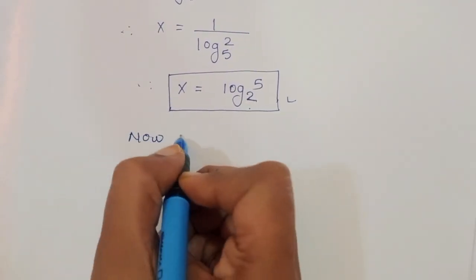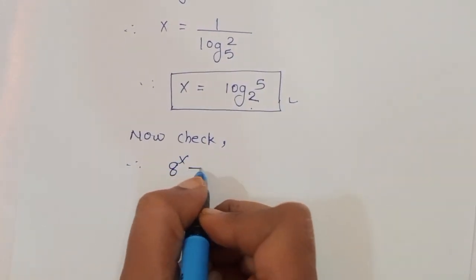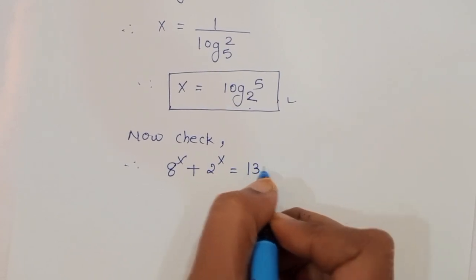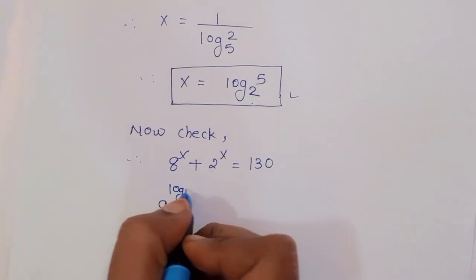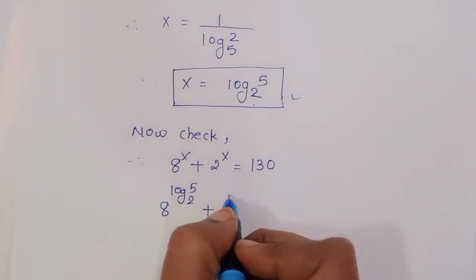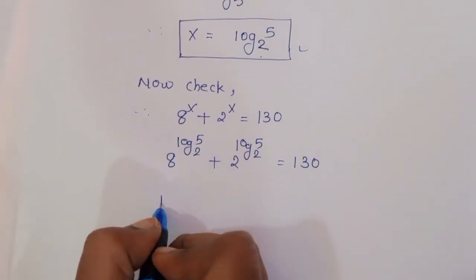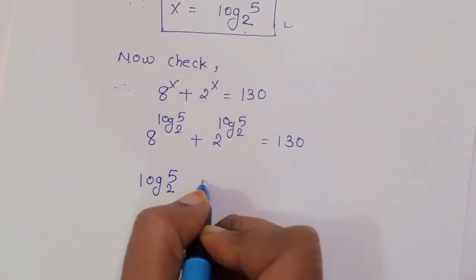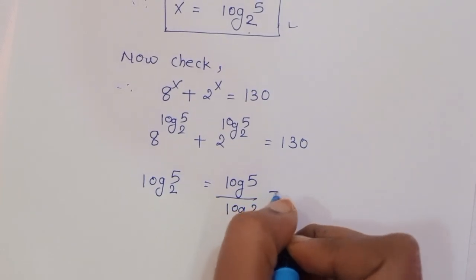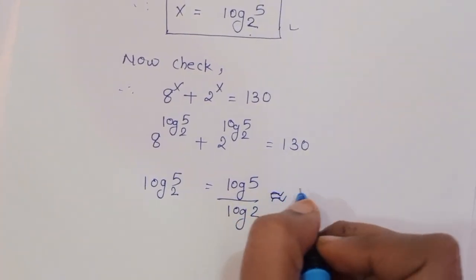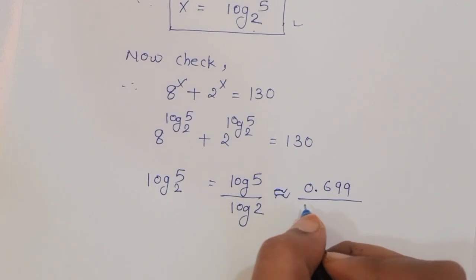Now we can check if it is correct. Substituting x equal to log of 5 to the base 2 back into 8 power x plus 2 power x. The approximate value of log 5 is 0.699 and log 2 is 0.301, so log of 5 to the base 2 is approximately 2.32.